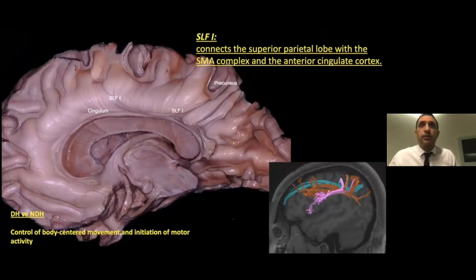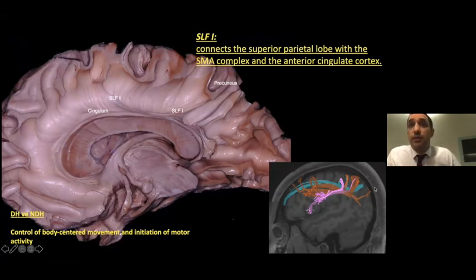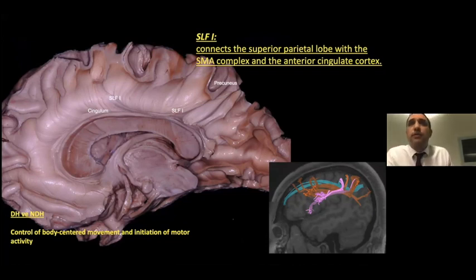Looking at the left hemisphere from the medial side, we see the SLF1. The SLF1 connects the superior parietal lobe with the SMA and the anterior cingulate cortex. Functionally, in both hemispheres, it is related to higher-degree control of body-centered movements and initiation of motor activity.